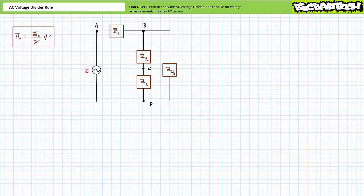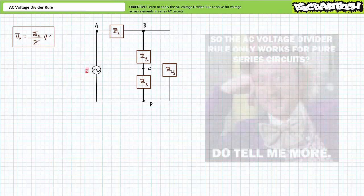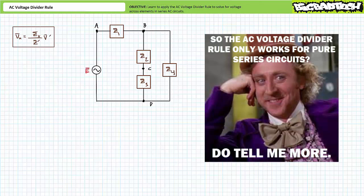Before closing, let me address viewers who have commented about the utility of the voltage divider rule. A common complaint is my broad statement promising voltage values without calculating total impedance or current. They point out that the denominator — the summation of impedances in the path — is the total impedance. This is true only for purely series circuits where one is considering the complete circuit. I urge you to think beyond this limited perspective.